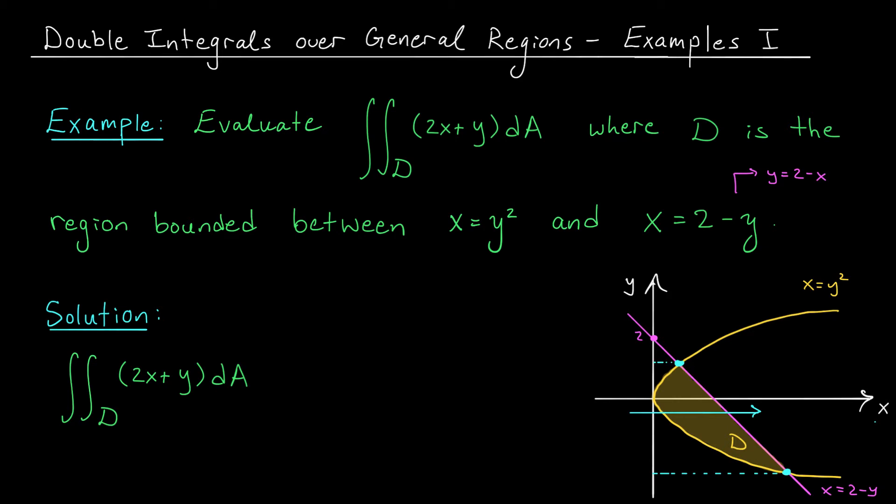We don't yet know those points, but we'll probably need to find them in order to set up our integral. We get those points by equating the equation of the parabola and the equation of the line. So if y squared is equal to 2 minus y, we can move everything to the left to get y squared plus y minus 2 equals 0.